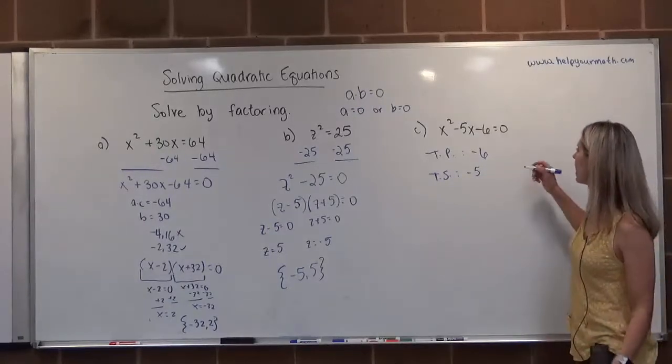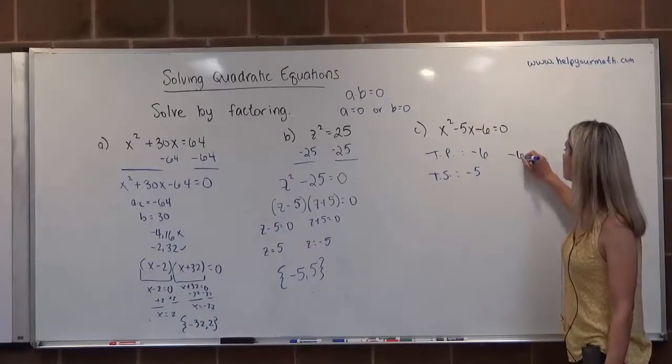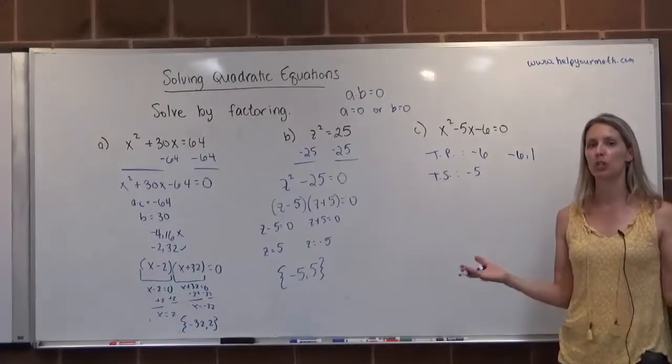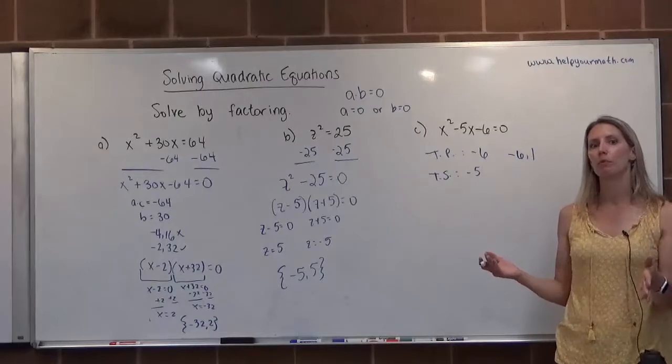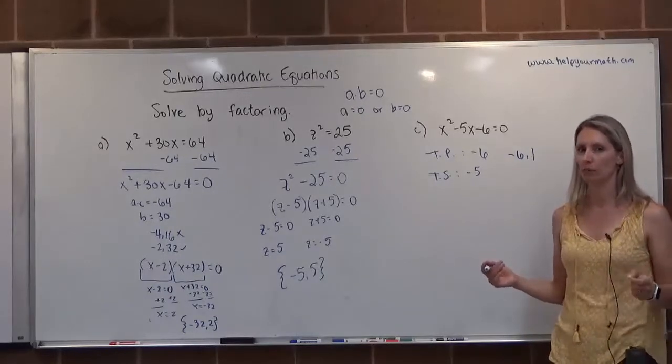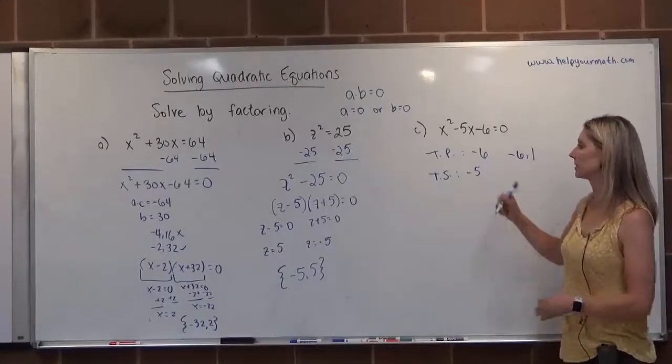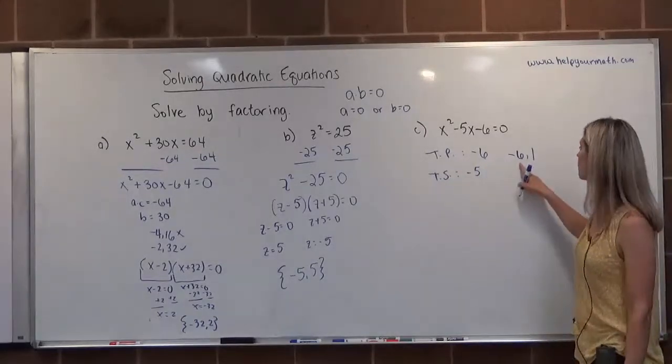Since we have a negative times a positive, it has to be negative 6 and positive 1 to get negative 5, because if it was 3 and 2, one would be negative, one would be positive, and it would add up to 1 or negative 1, so be really careful with the target product being some kind of 6 and the target sum being some kind of 5.